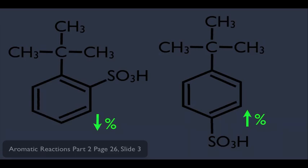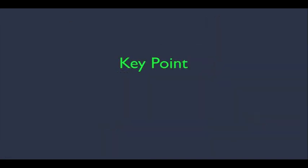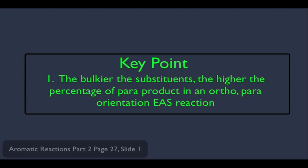So as long as the example is extreme, we can make a prediction. But there are cases that are gray areas where you would have to go into the lab and run the reaction to see exactly which product is in a higher percentage. What we're learning here is that in organic chemistry, we want to walk into our test understanding the principles discussed here, so that in extreme examples we know how to predict the higher percentage product. Our key point is basically this: the bulkier the substituent, the higher the percentage of para product in an ortho-para directing electrophilic aromatic substitution reaction.